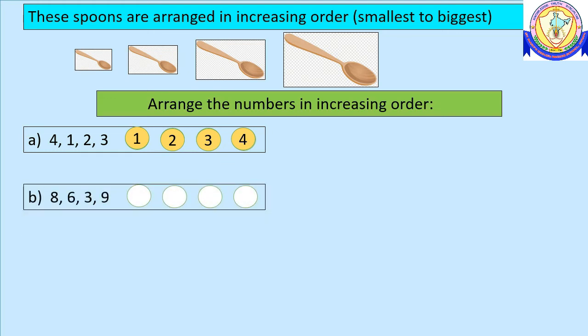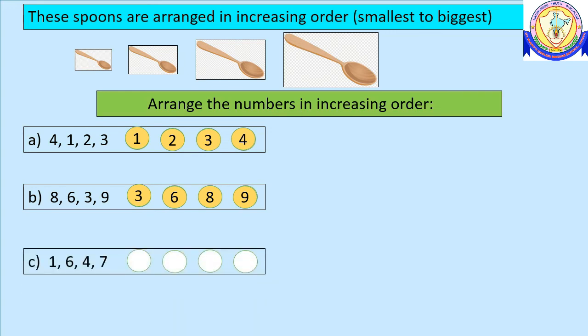Now we can see the numbers eight, six, three, nine. The smallest number is three, next is six, then eight, and the last number is nine. For the last example, we have numbers one, six, four, seven — arranged in increasing order: one, four, six, seven.